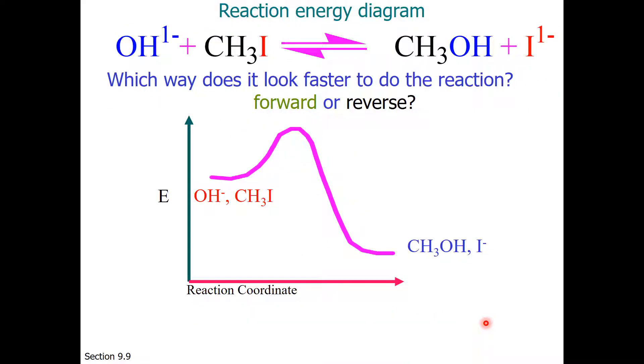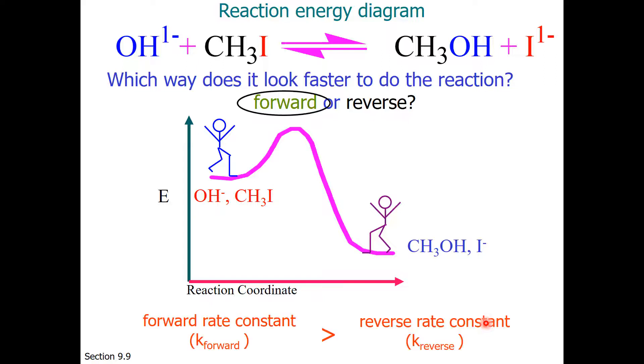Now let's look at speed. Which way does it look faster to do the reaction? Forward or reverse? Imagine you and your friend run at approximately the same pace. Which one of you is going to reach the top of the hill faster? Well, you are. So that means that the forward rate constant is greater than the reverse rate constant. You will reach the top of the hill faster than your friend.